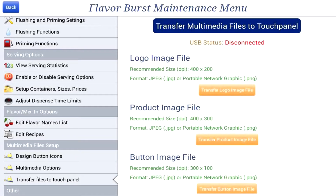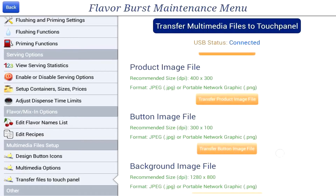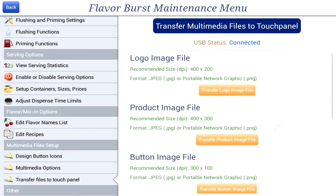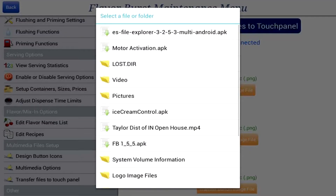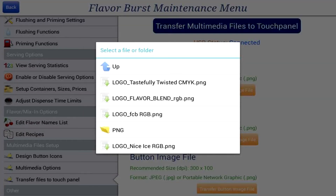Now that we know what each of the file types are, let's transfer some files. Insert a USB drive with your files on it into the touch panel. The touch panel will detect if you've inserted a USB drive. Let's try a logo — press Transfer Logo Image File. Find a logo file on the USB drive and click to transfer it.